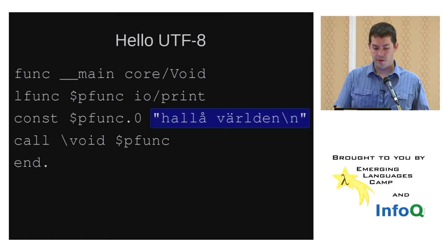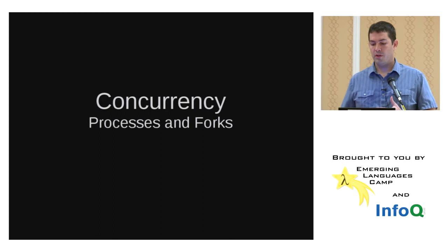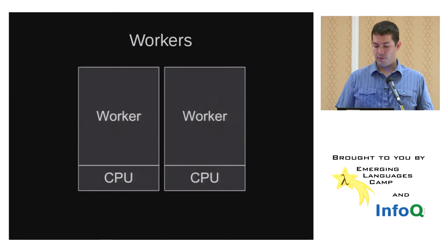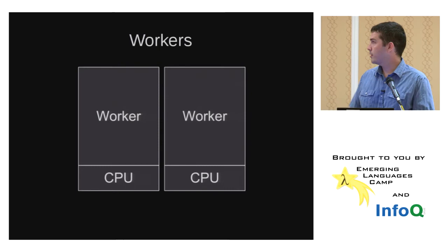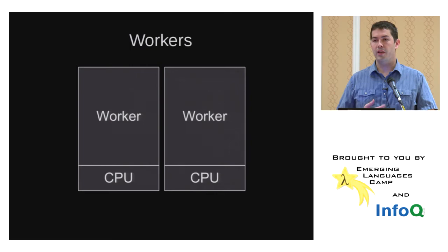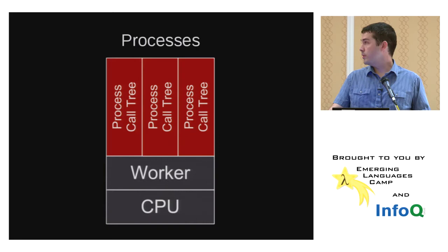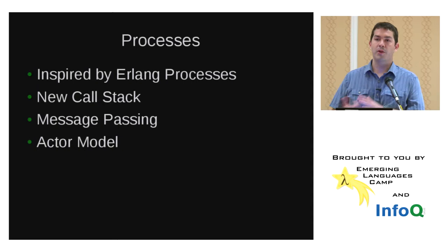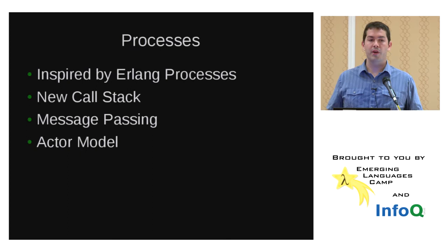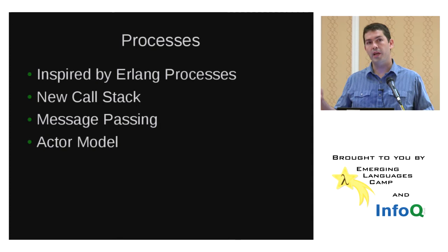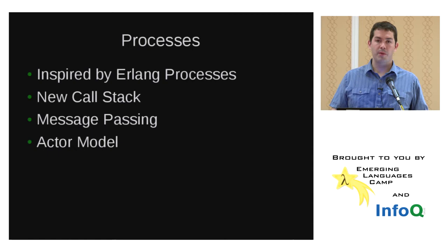I've talked a lot about concurrency. There are two models for concurrency in Qbert: processes and forks. Workers are more of a Qbert system-level thing — not really code-related. It's one CPU to a worker, and the worker handles scheduling. Within a worker, each worker has multiple processes. A process is similar to an Erlang process — it's a new call stack, not related to the calling or creating process at all. Processes interact with each other via message passing, and this is what you would use to implement the actor model.